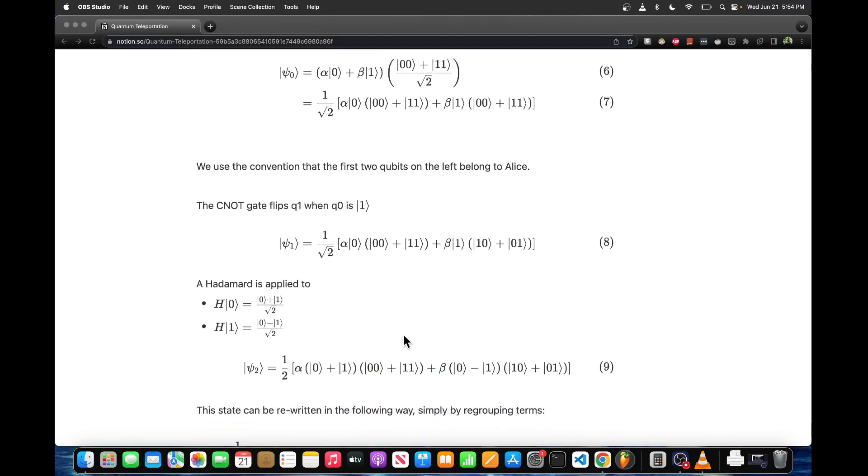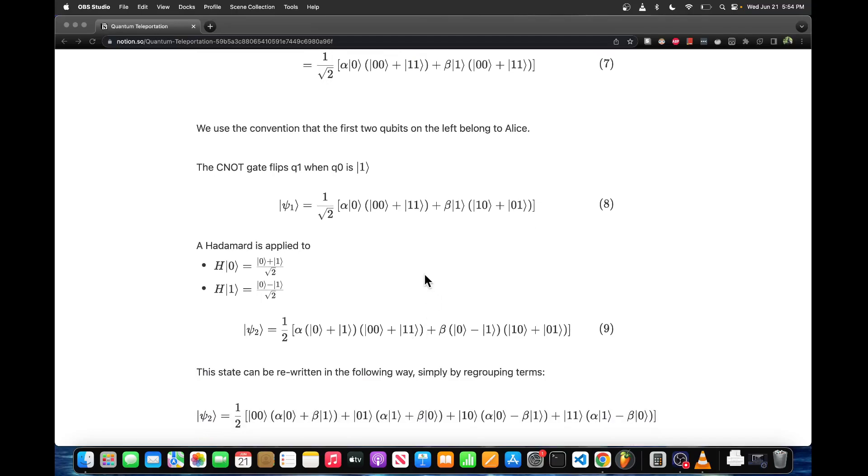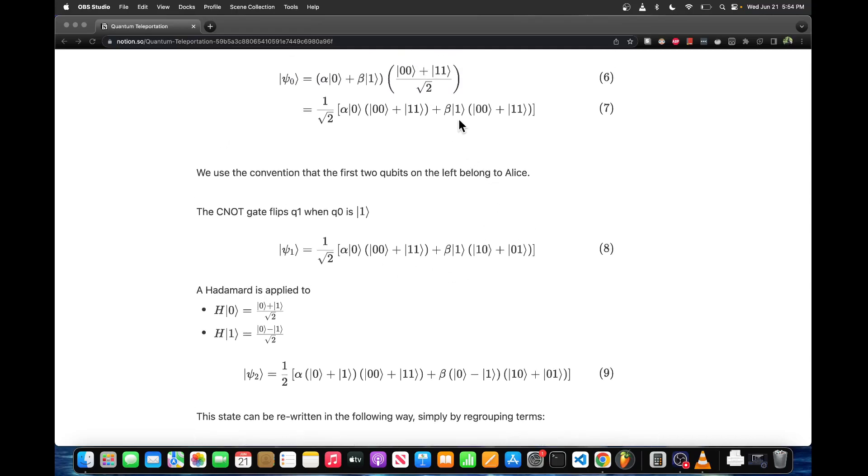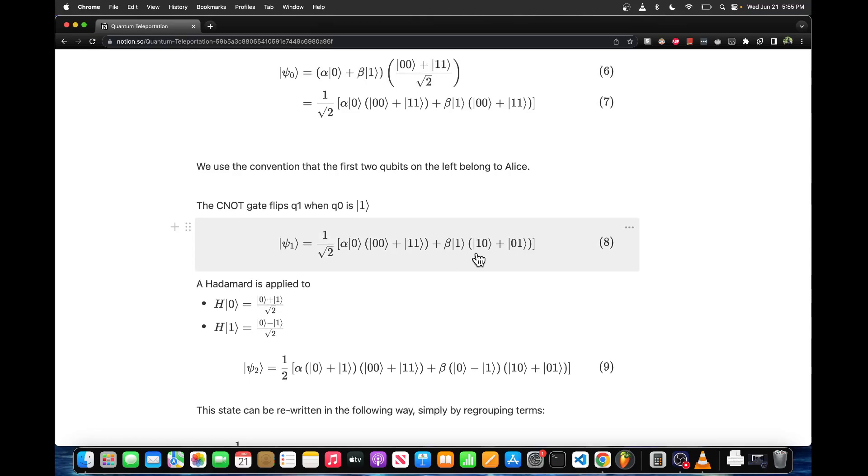The first thing we do is apply a CNOT which flips q1 when q0 is in the one basis state. When q0 is in the one state, this term here, we're going to flip q1, so this 0 is going to become a 1. This 1 is going to become a 0, and nothing's going to happen over here because q0 is not in a 1 base state. When we do that bit flip we get something that looks pretty much the same except this is now a 1 and this is now a 0.